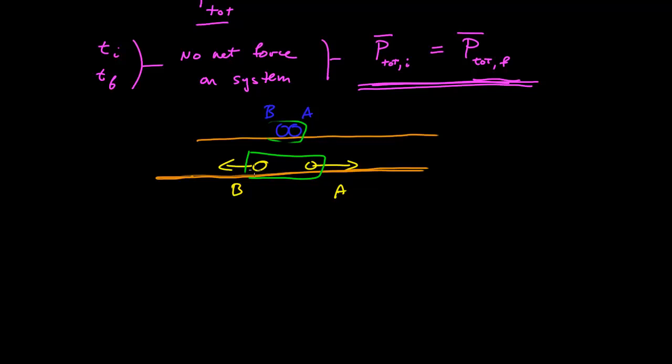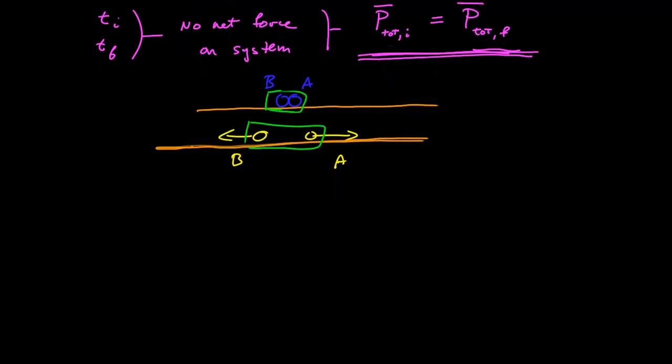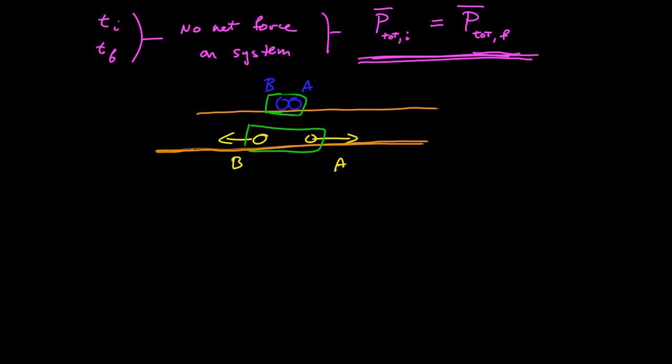Initially before this explosion and initially after this explosion, there was no net force on the system. They were exerting forces on each other, but those were equal in magnitude opposite direction, so there was no net force on the system. That means there's no net external force on the system because all the internal forces cancel because of Newton's third law. So there's no net external force on the system before and immediately after this explosion. So let's identify those as our two points in time and see what our conservation of momentum gives us.